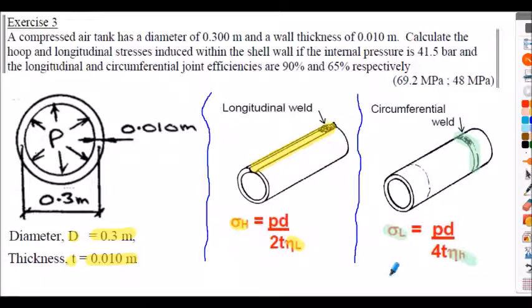A note on notation: I sometimes use lowercase d for diameter and sometimes capital D, sometimes lowercase p for pressure and sometimes uppercase P, similarly for h (hoop). Don't let the notation confuse you — different textbooks use different notation, and the meaning is consistent.